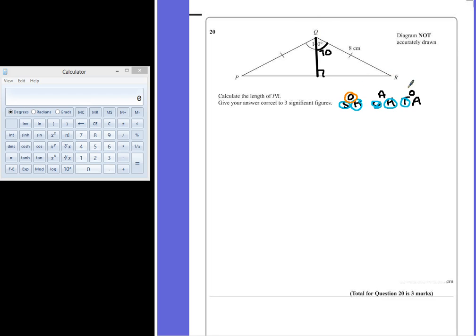So that shows that in this question, we are going to be using sine to calculate the missing length.